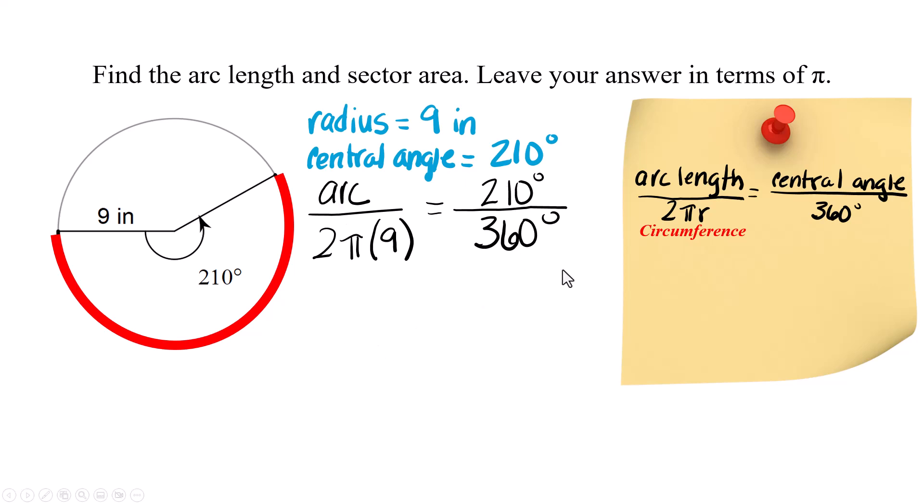I am going to cross multiply right now so 360 times the arc is going to equal 2π times 9 times 210. Divide both sides by 360.